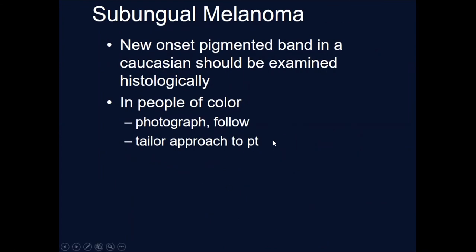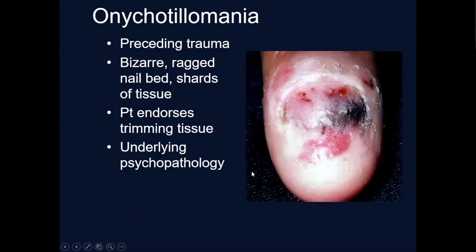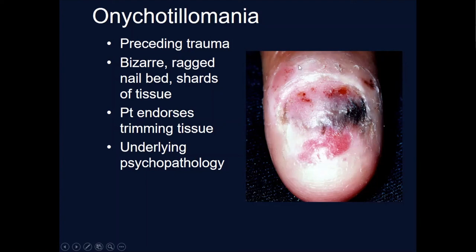One last entity that can fool us is people who pick, chew, or bite on their nails. What we look for is bizarre findings in the nail unit — could this be a melanoma? Yes, but you can see all this erosion of the proximal nail fold and scale — this person has been working on their nail. When you talk to them, usually they'll say they've been trimming it and sometimes show you the metal instruments they're using. This can be a form of OCD and can be quite extensive.